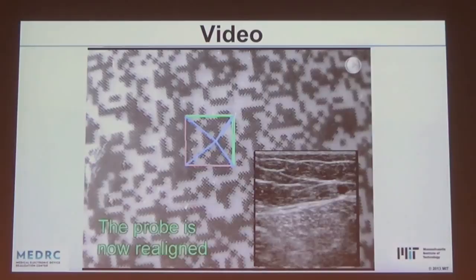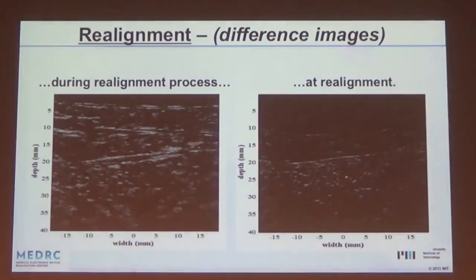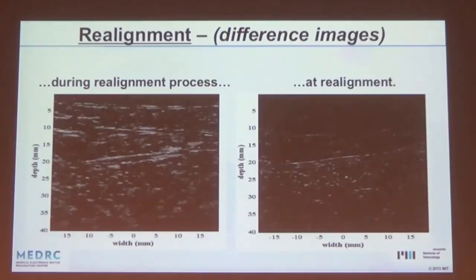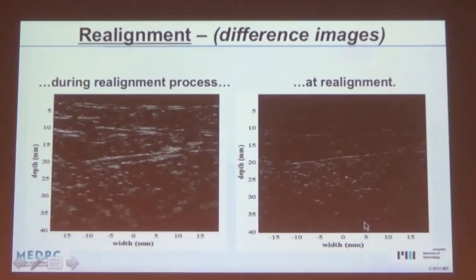During the realignment process, this is a difference image — the target ultrasound image subtracted from the current one. At perfect realignment with no body changes, this image would be completely black. During realignment there is a lot of texture; as you get close, it becomes black. What we see is that it's very black at the surface, but blackness decreases at depth — suggesting we're not controlling force. We can get back to the same position and orientation, but the next step to achieve complete registration is to also add force control.